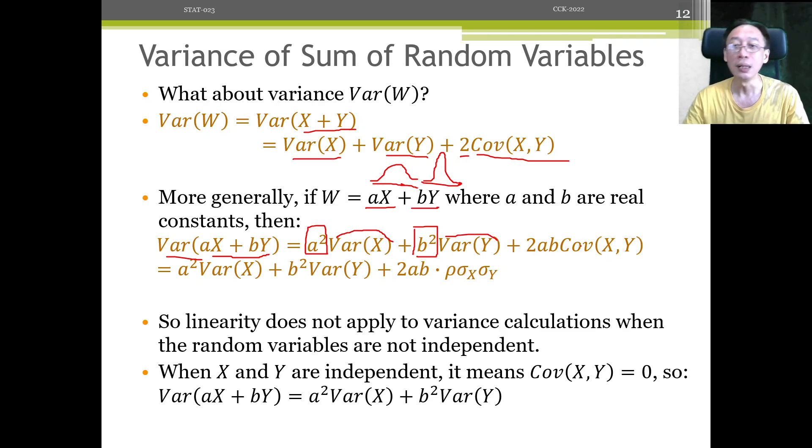And for covariance, you need to pull out the a and the b. A from the X here, aX pulls out as a. bY pulls out as b. Then you have 2ab covariance XY.